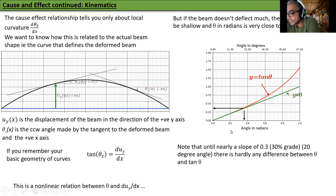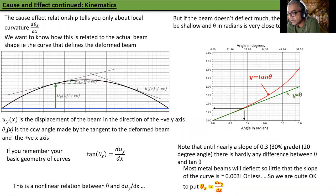Note that until nearly a slope of 0.3, which is 30% grade, 20 degree angle, there is hardly any difference between theta and tan theta. Most metal beams will deflect so little that the slope of the curve is approximately 0.003 compared to 0.3. So we are quite okay to put theta z equal to dUY/dx. So this is our approximation for shallow curvature, small deflections.